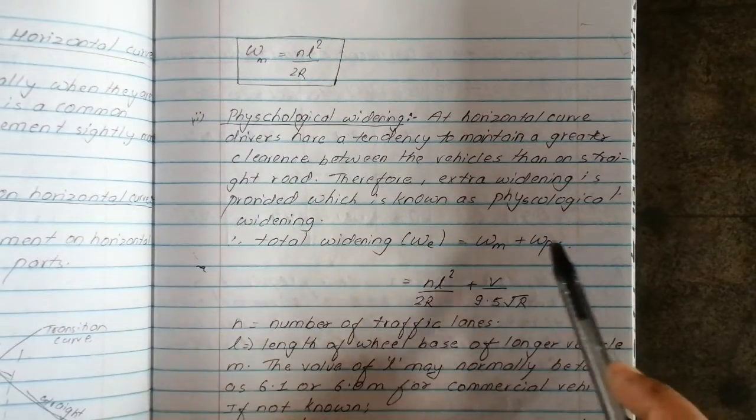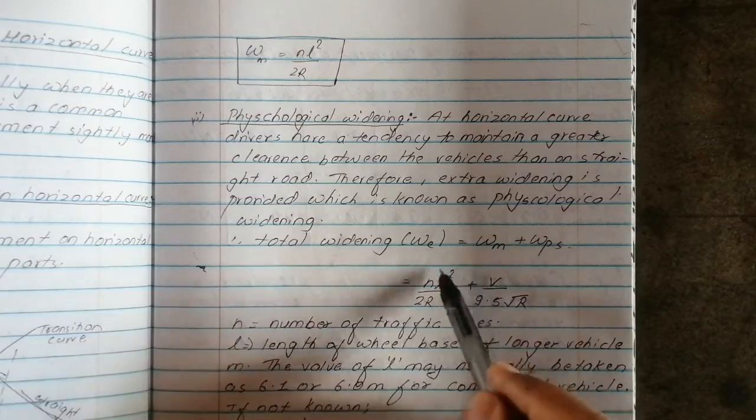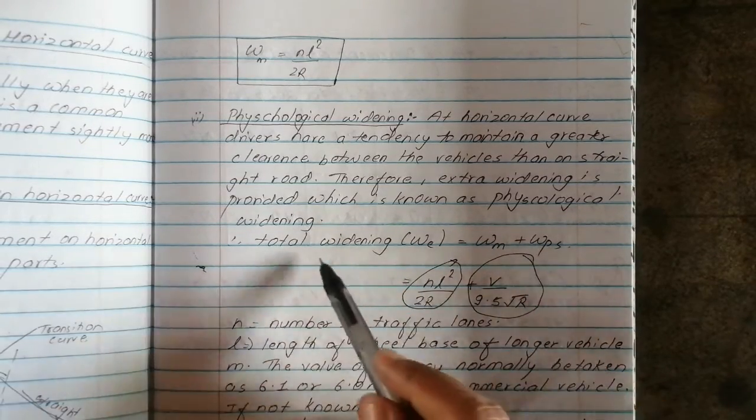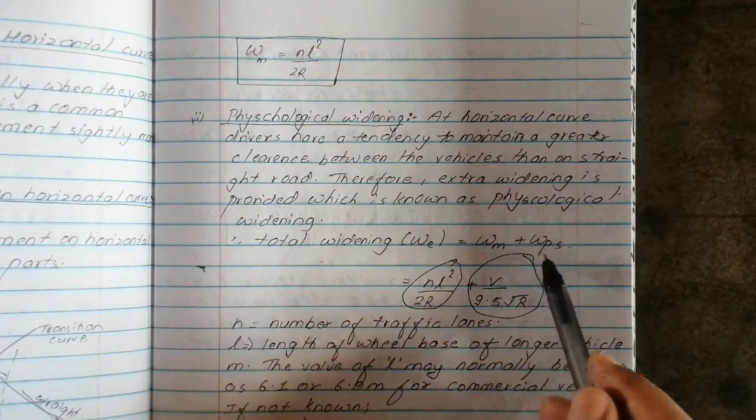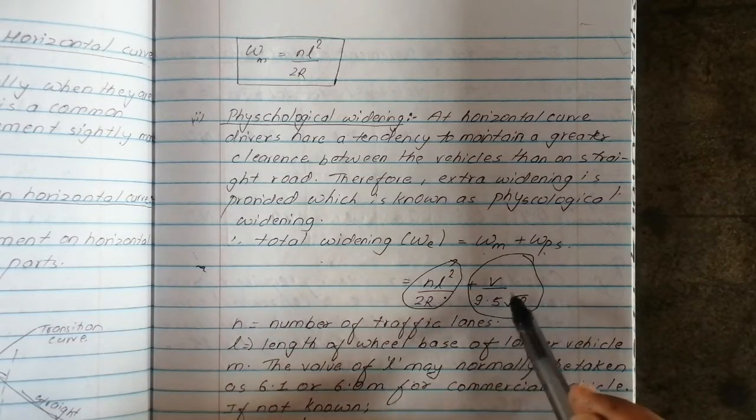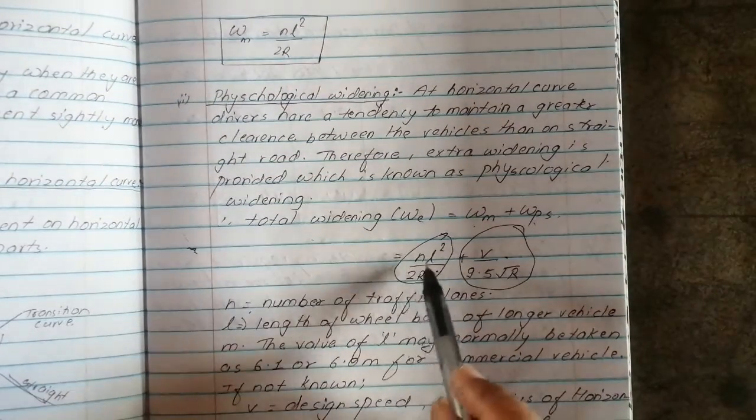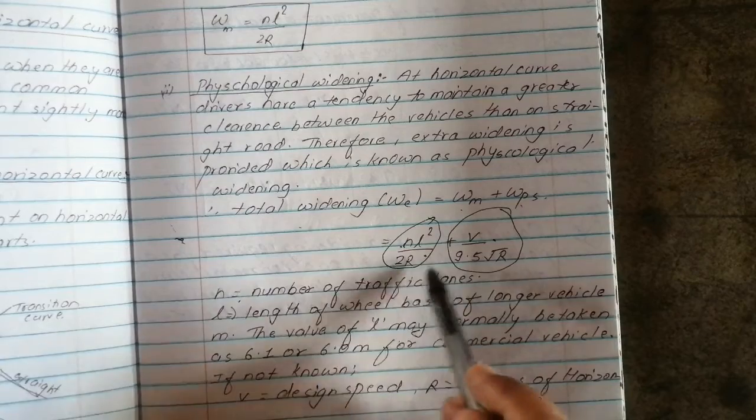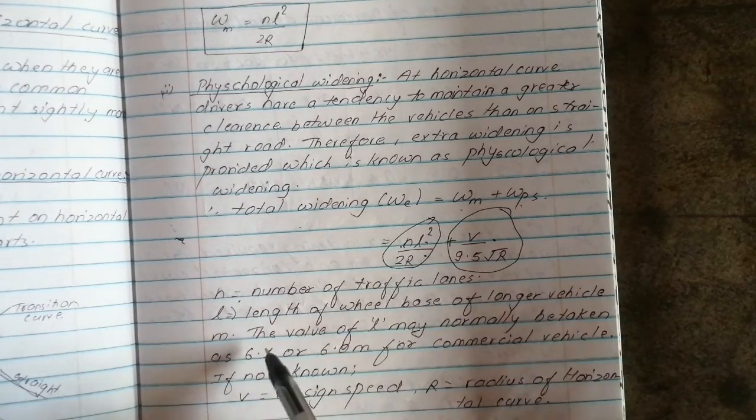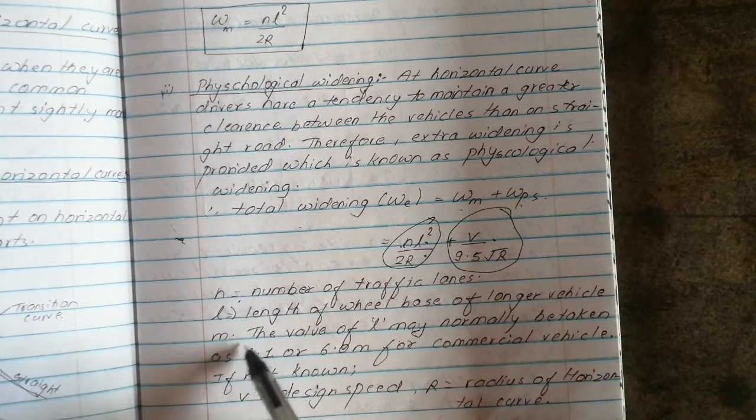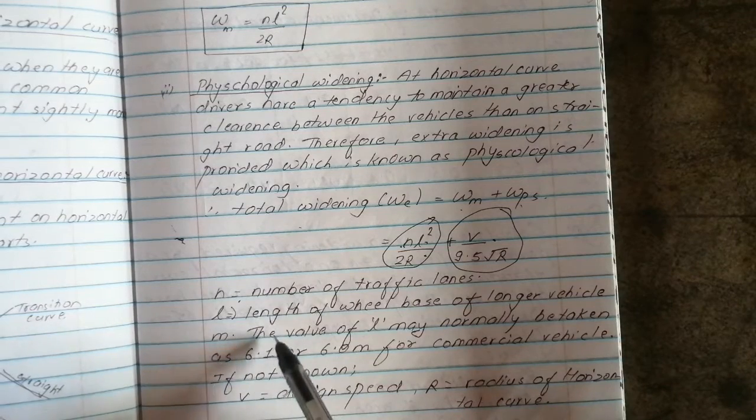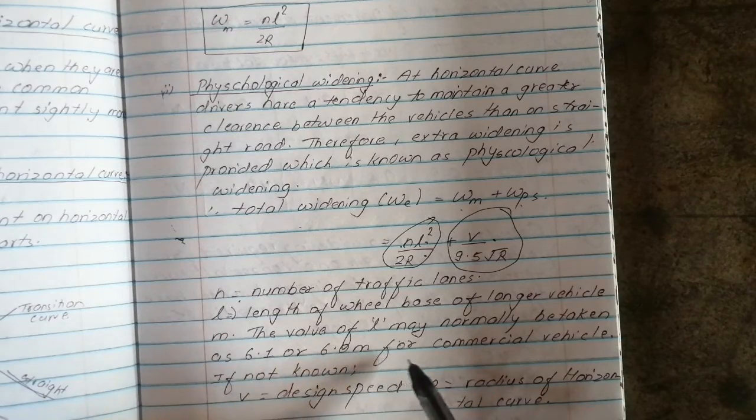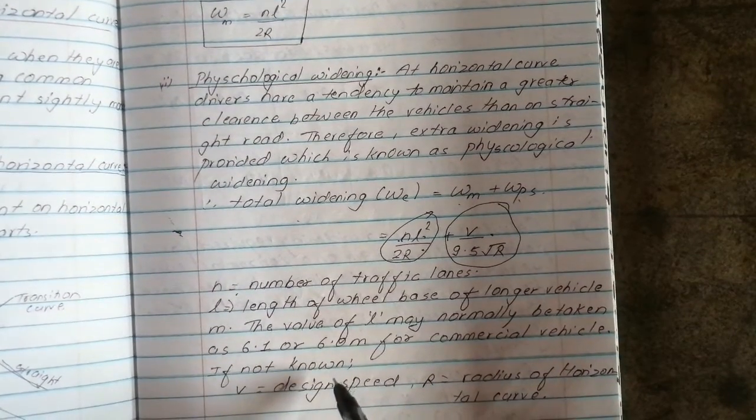Total widening WE equals WM plus WPS, mechanical widening plus psychological widening, where N is equal to number of traffic lanes, L is length of wheelbase of longer vehicle. The value of L may normally be taken from 6.1 or 6 meter for commercial vehicles.